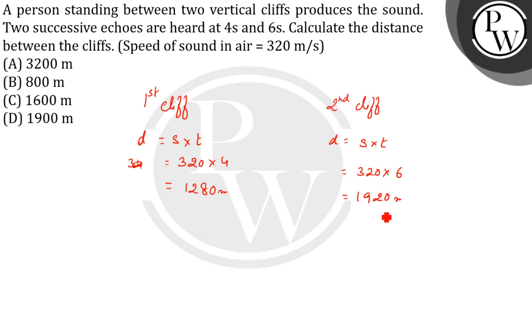Now we have to find the distance between two cliffs. First cliff distance is 1280, this is for twice so we'll divide it by 2. And for the second one it is 1920, again twice so we'll divide it by 2. So what we get: we get 640 plus 960, which gives us 1600 meters.